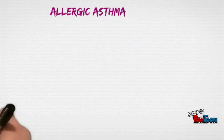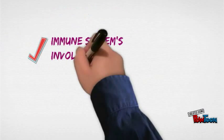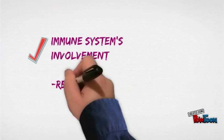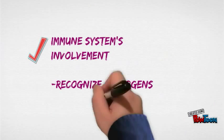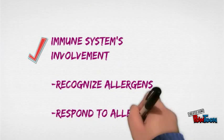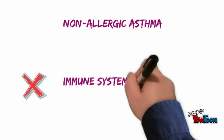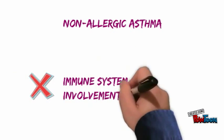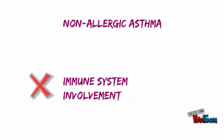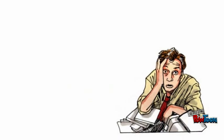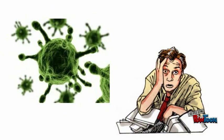In allergic asthma, the immune system plays a role as it is involved in the recognition and response to allergens. Non-allergic asthma does not require the involvement of the immune system and can be caused by a variety of factors such as stress, viruses, and dry air.